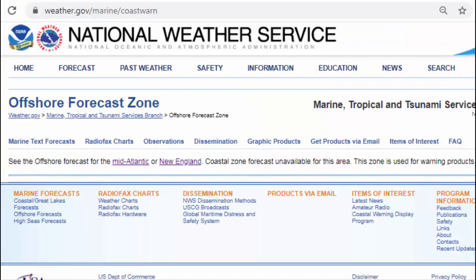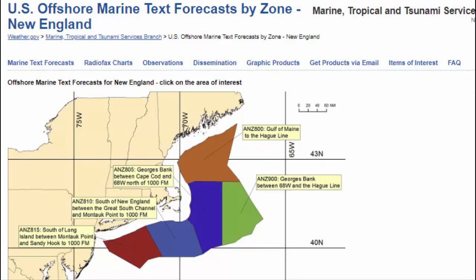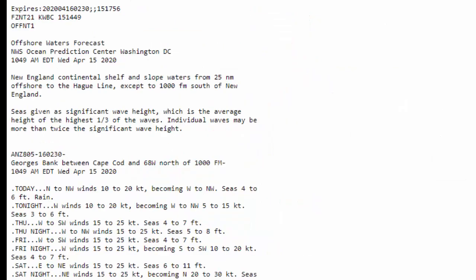My point to you is: study this online at home before you go to sea. Make up lists of the information you want to get, the files you want to download. When you're at sea, you'll be prepared. This is the near shore, coastal, and the offshore outer band. If I choose the outer band and pick New England, it brings me to this offshore forecast area. And again we see ANZ805. If I choose ANZ805, it gives me this forecast.